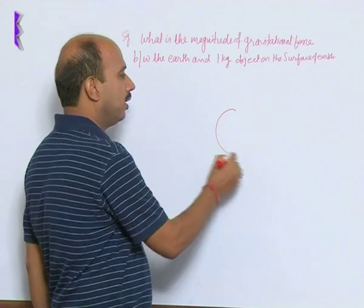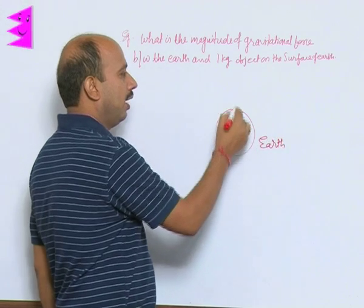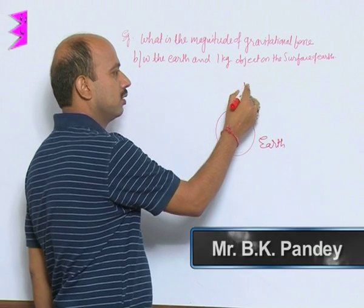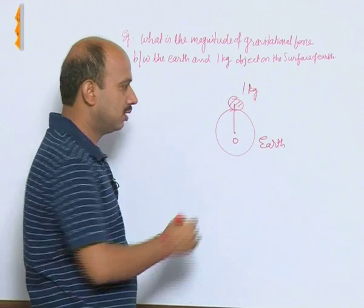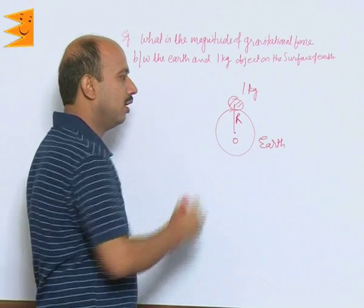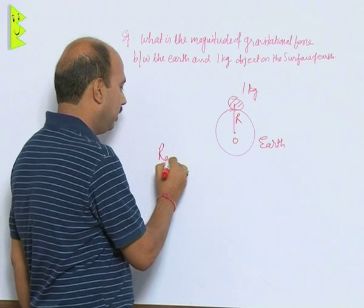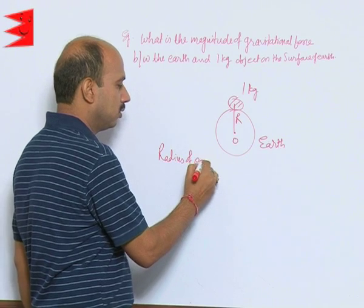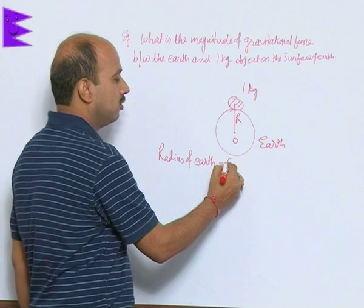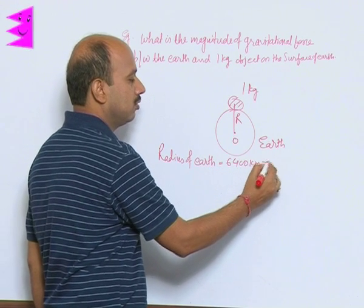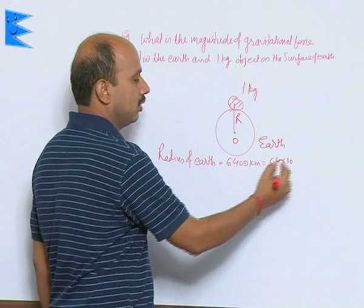Suppose you have Earth like this. This is the center of Earth and here is a 1 kg object. Distance between the object and center of Earth is capital R, which we can take as the radius of Earth. The radius of Earth will be given to you in the question: 6400 kilometers, that is equal to 6.4 into 10 raised to power 6 meters.